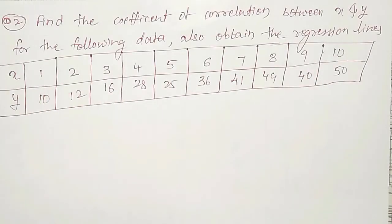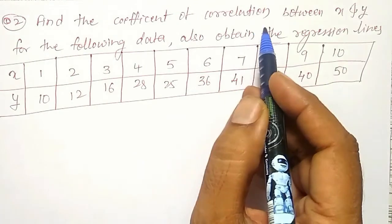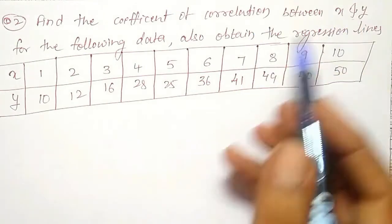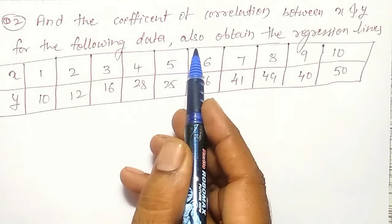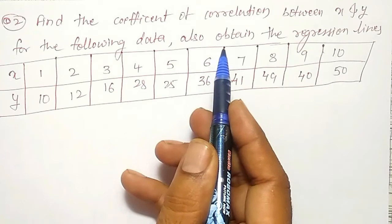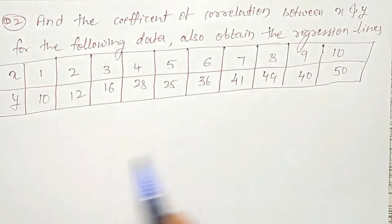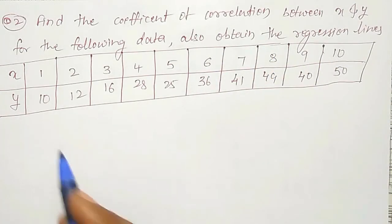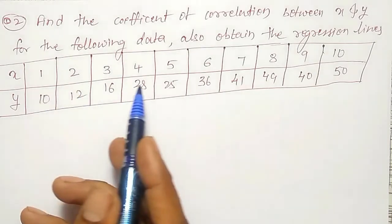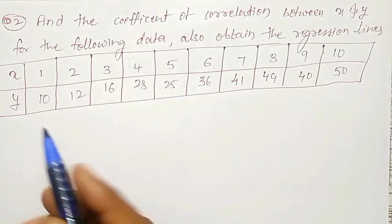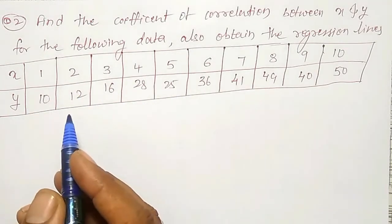It's a simple example to find the coefficient of correlation between x and y for the following data, and also we are obtaining the regression lines. Here x values are given: x equal to 1, 2, 3, up to 10, and corresponding y values are also given.